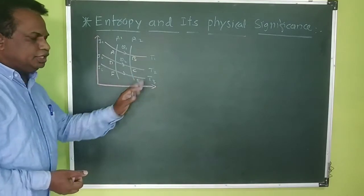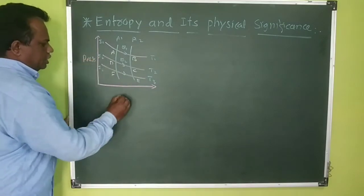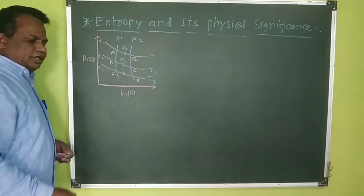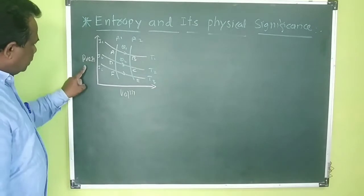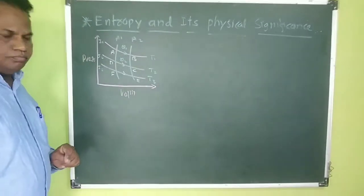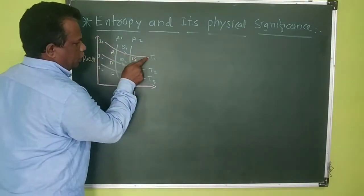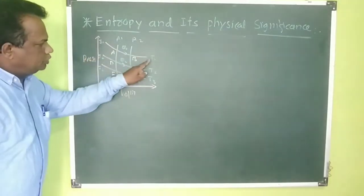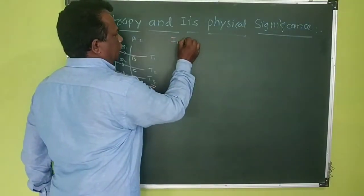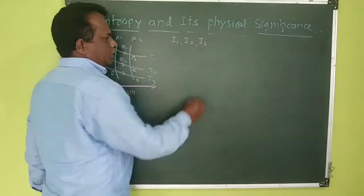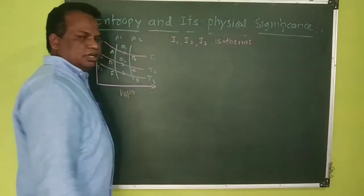This figure shows the indicator diagram of the processes. We plot pressure on one axis and volume on the other. The indicator diagram is a graph between any two variables of the system. Here I1, I2, I3 are the isotherms — isothermal processes at temperatures T1, T2, and T3 respectively, meaning the temperature of the system remains constant along each curve.